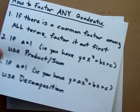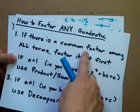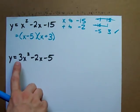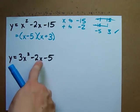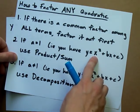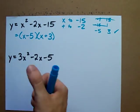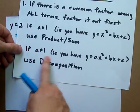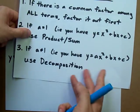Okay, let's do this one. Start at the beginning. Is there a common factor among all the terms? 3 and 2 and 5. Nothing common among those. Is it a bare x squared? It's not. So we're going to have to use this thing called decomposition.